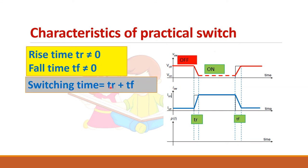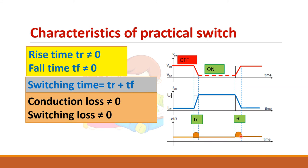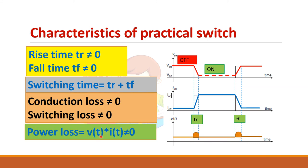The switching time is given by rise time plus fall time. If you multiply the voltage and current waveforms, there will be a power loss. During the rise time and fall time periods, both the current and voltage values are at their peak, so you get more power loss during this period. Similarly during fall time there is also a high power loss. So the power loss V×I is not equal to zero and includes both conduction loss and switching loss.